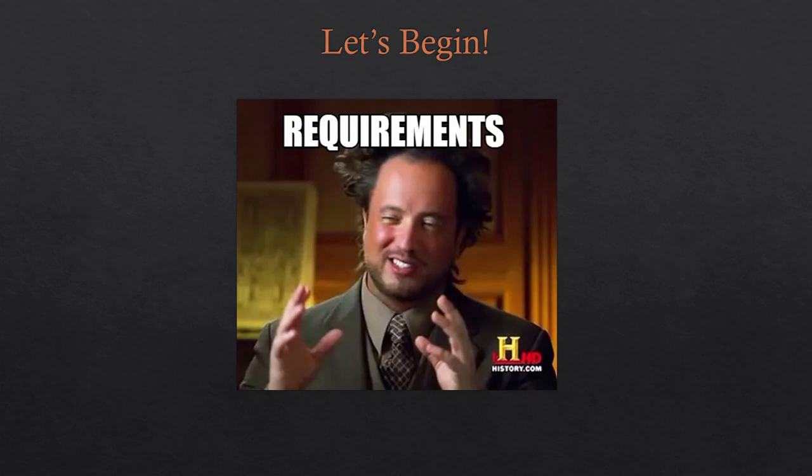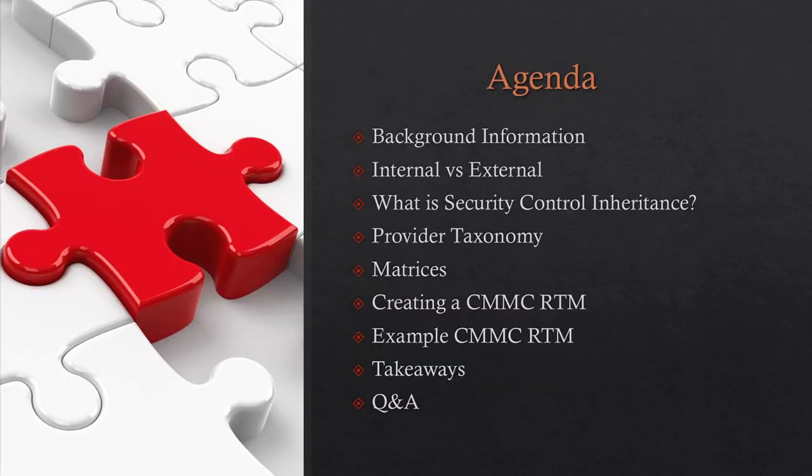Getting a baseline understanding of systems engineering is very helpful when designing and building systems for compliance with CMMC and other frameworks. This process works in other frameworks too, like Risk Management Framework. Today we'll cover background concepts, internal versus external, what security control inheritance actually is, taxonomy around different providers, matrices, and then the process of creating a requirements traceability matrix with an example and takeaways.